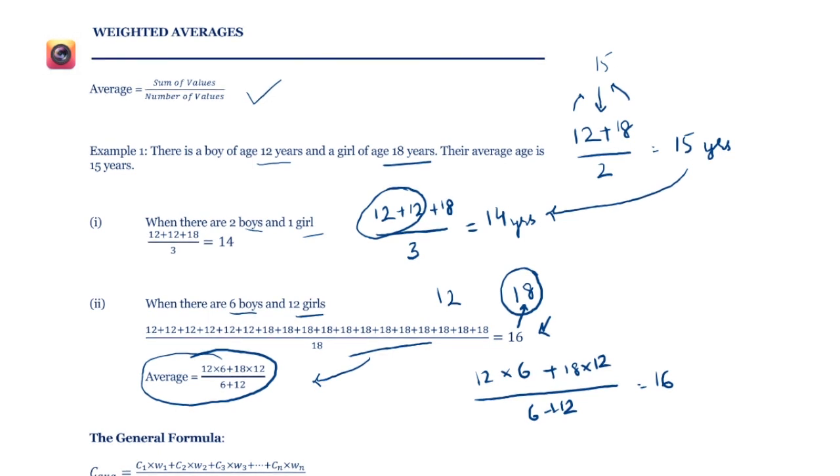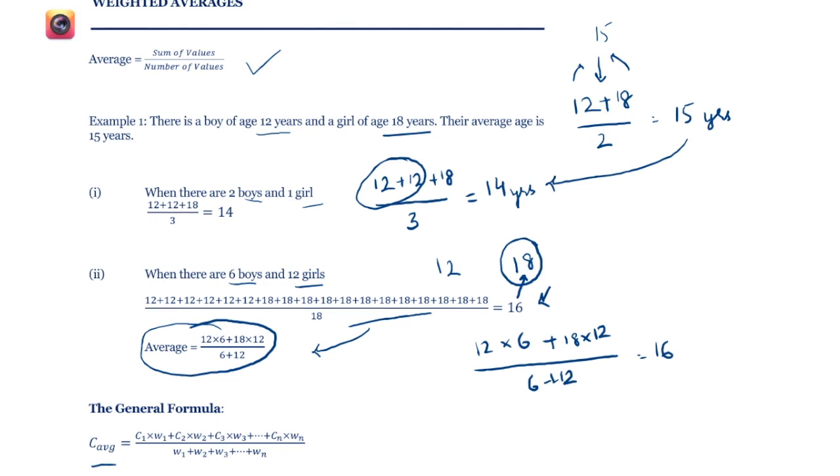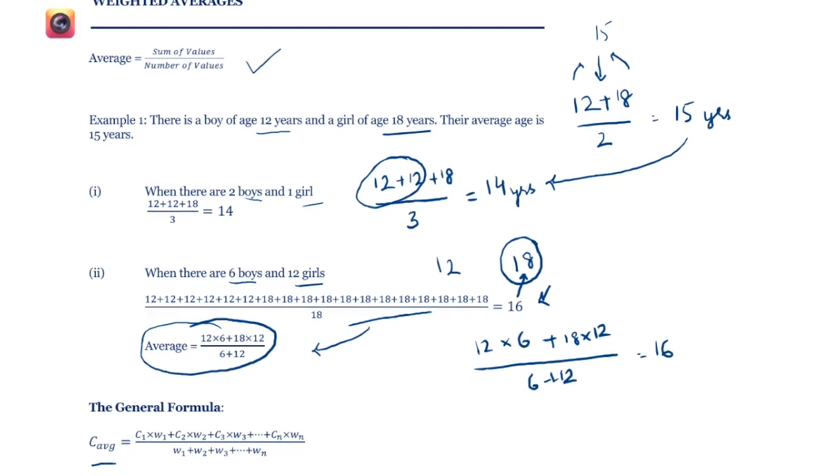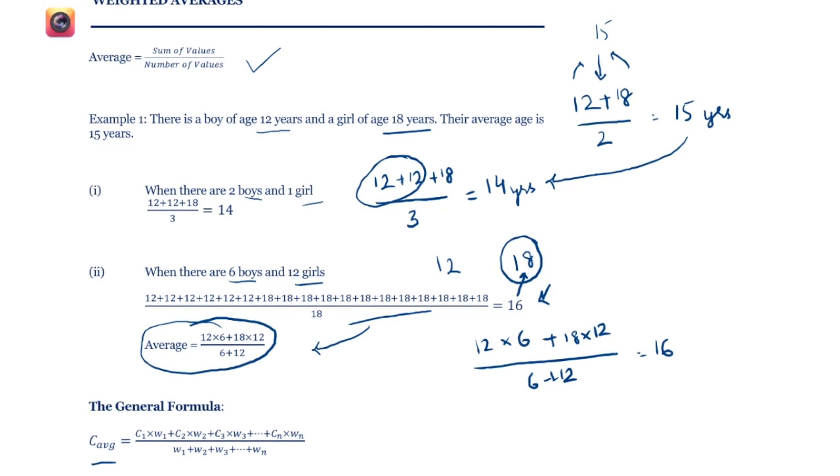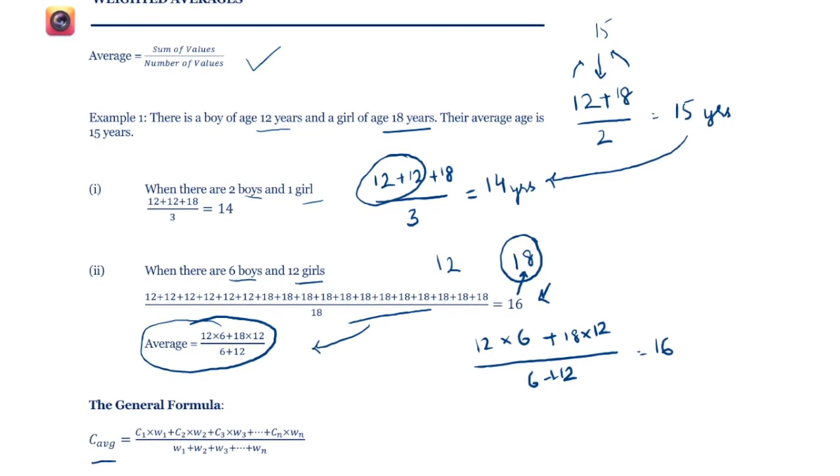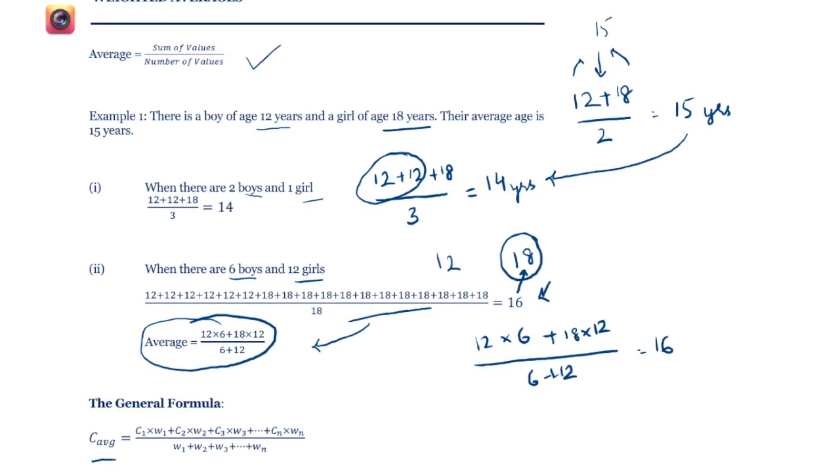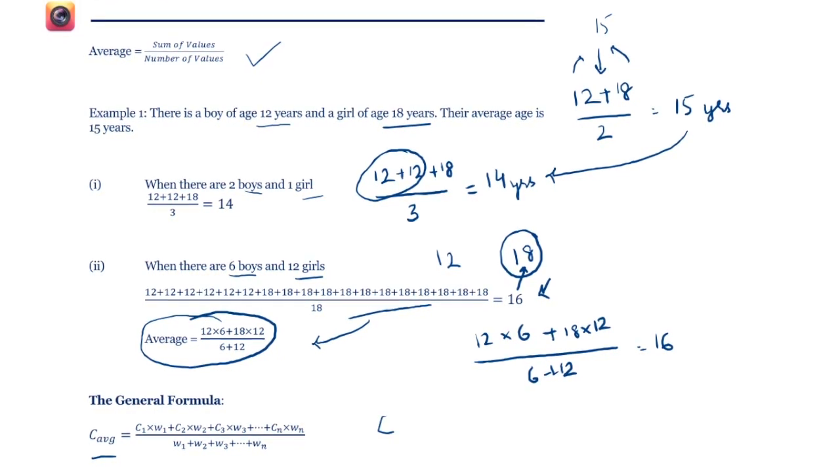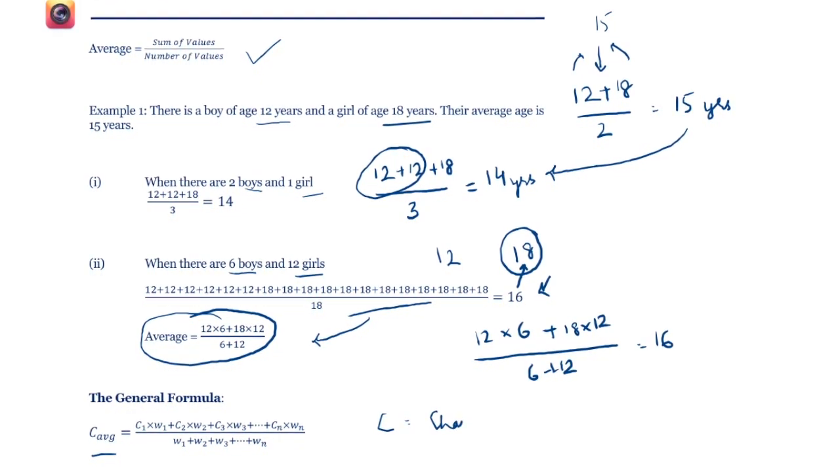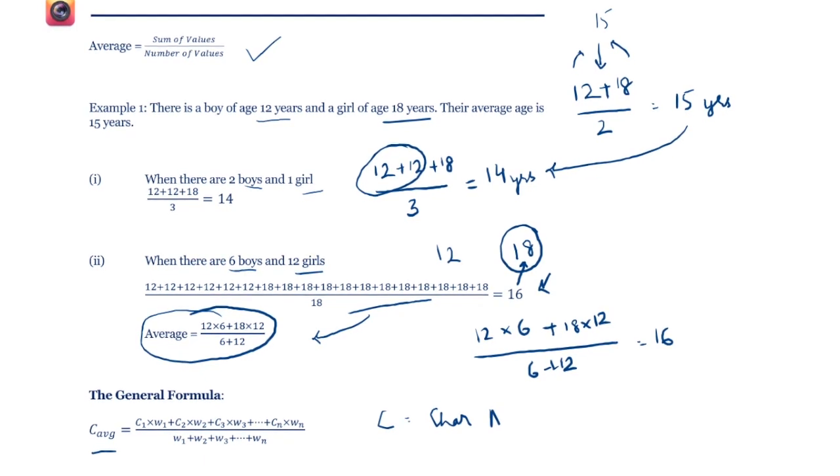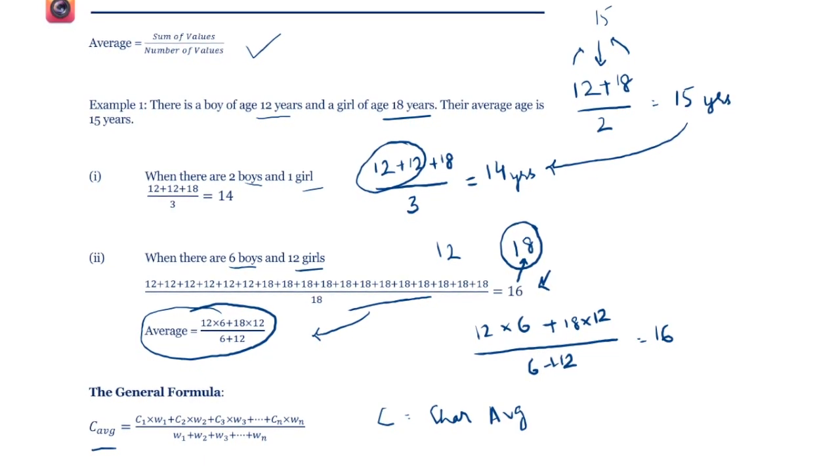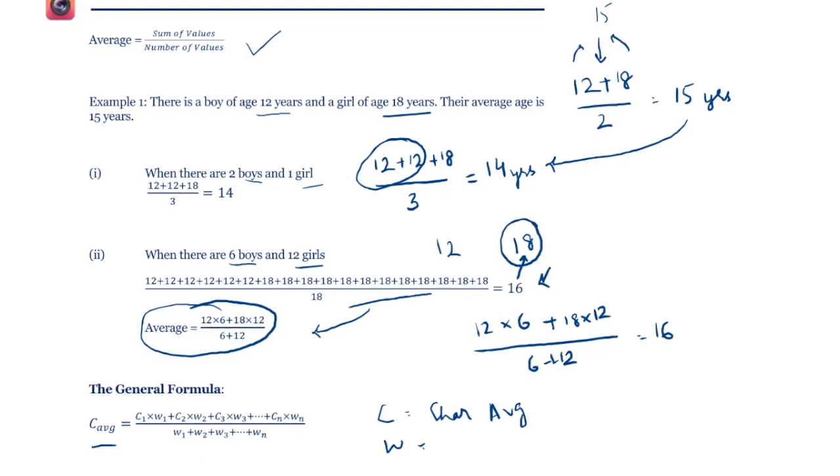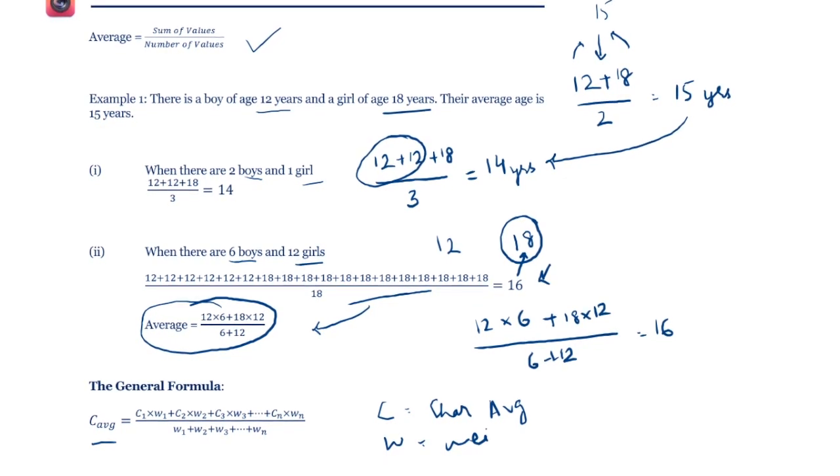Your 12 and 18 are the two ages which we are trying to average, and 6 and 12 are the weights that we have given to each. Look at the general formula: c average equals c1·w1 plus c2·w2 upon w1 plus w2. C is the characteristic that we are trying to average, and w is the weight given to each instance of that characteristic.